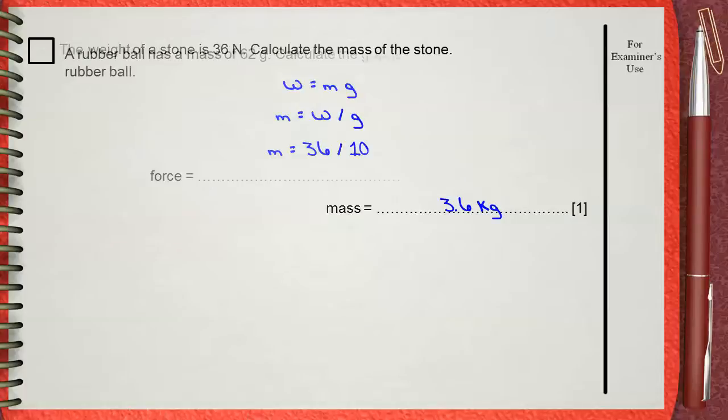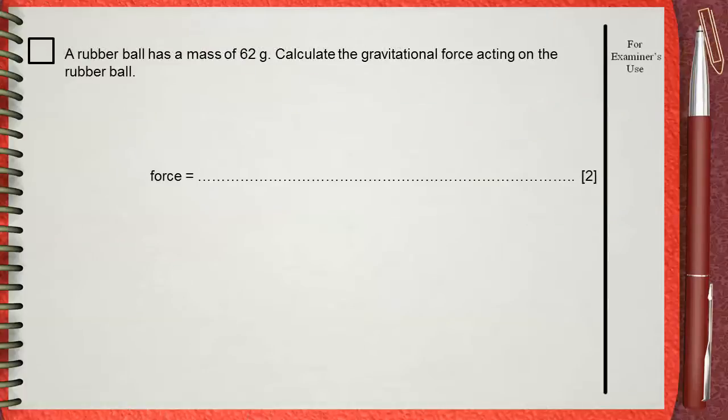Question 2. A rubber ball has a mass of 62 grams. Calculate the gravitational force acting on the rubber ball.